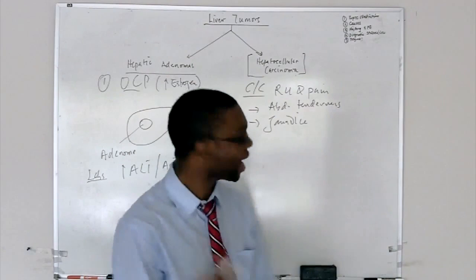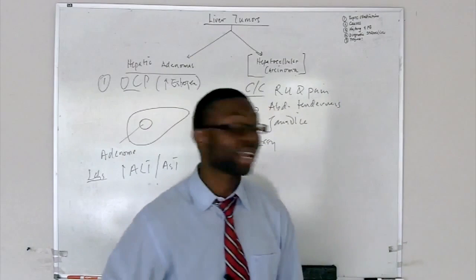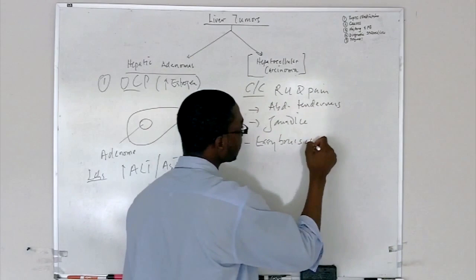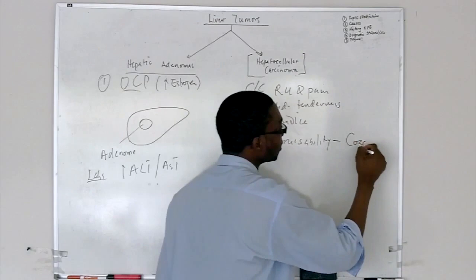They easily bruise. Why do they easily bruise? It's very easy. Remember, my job here is to explain the whys. I can't read the textbook out for you, because you're not going to learn anything. Why does this patient say, Doc, I bruise easily? That is the job of the liver. It makes coagulation factors.